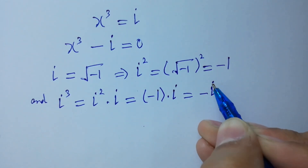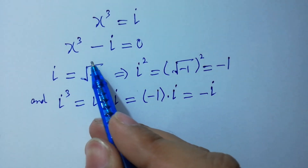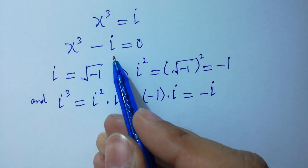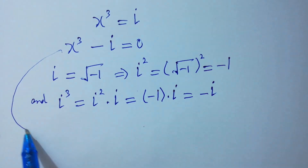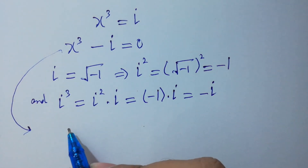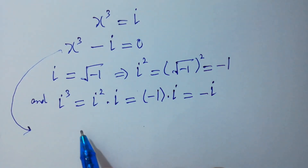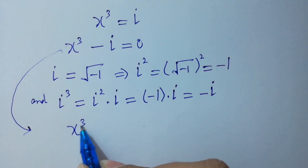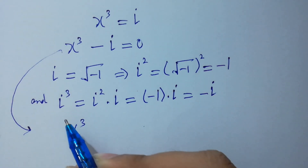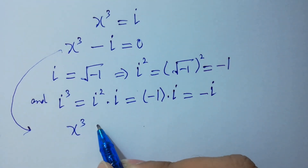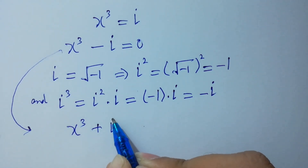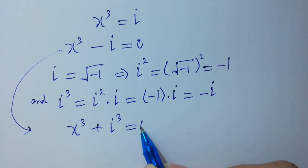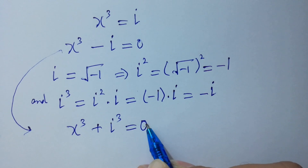So here, since i³ = -i, we can write x³ - i = 0 as x³ + i³ = 0.